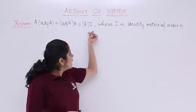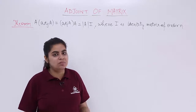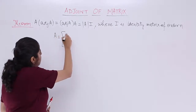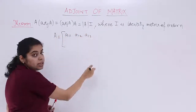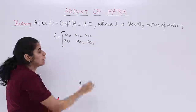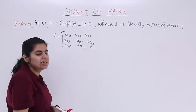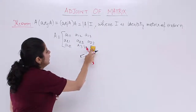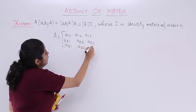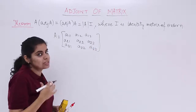Since I is the identity matrix of order N and A is also a square matrix of the same order N, we have A as a 3x3 matrix with elements A11, A12, A13 in the first row; A21, A22, A23 in the second row; and A31, A32, A33 in the third row — that is, third row first column, third row second column, third row third column.